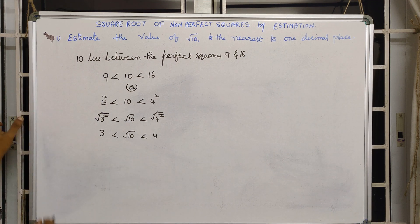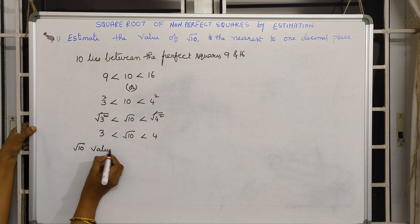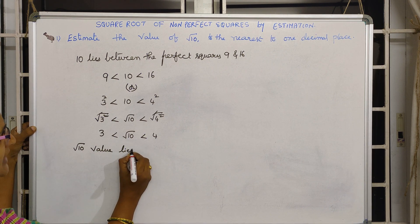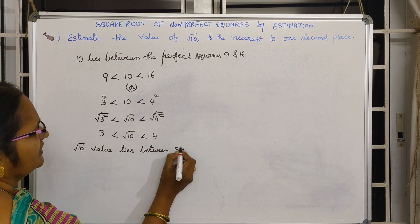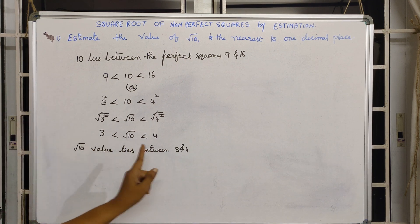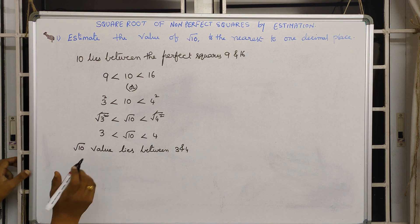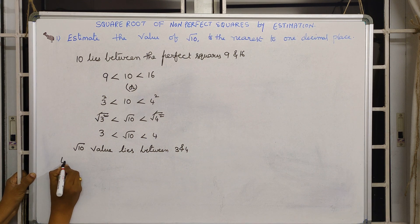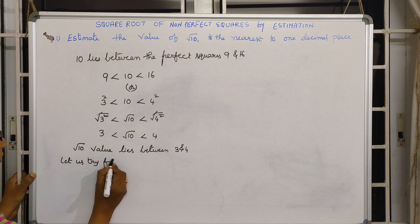That means the value of root 10 lies between 3 and 4. Between 3 and 4 there are many decimal numbers: 3.1, 3.2, 3.3, 3.4, and so on. To find the right one, we'll go the middle way and first try 3.5.